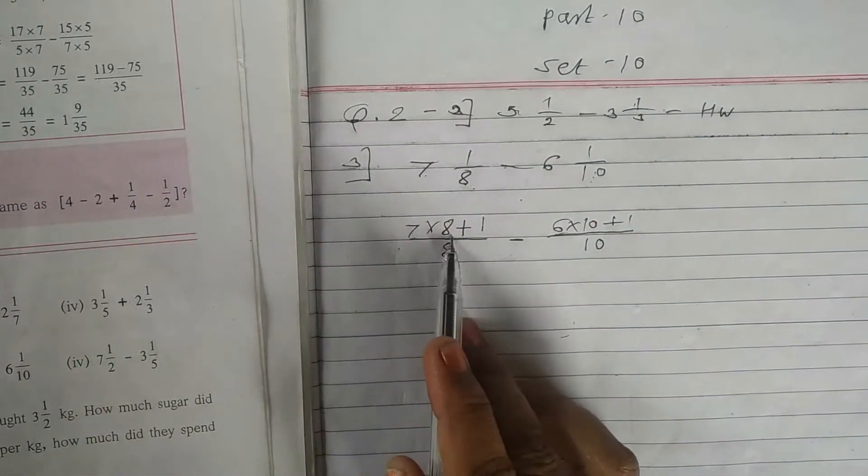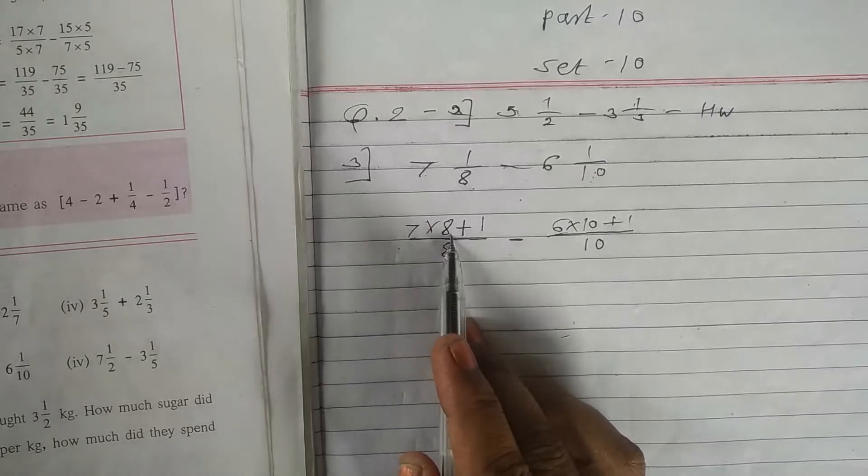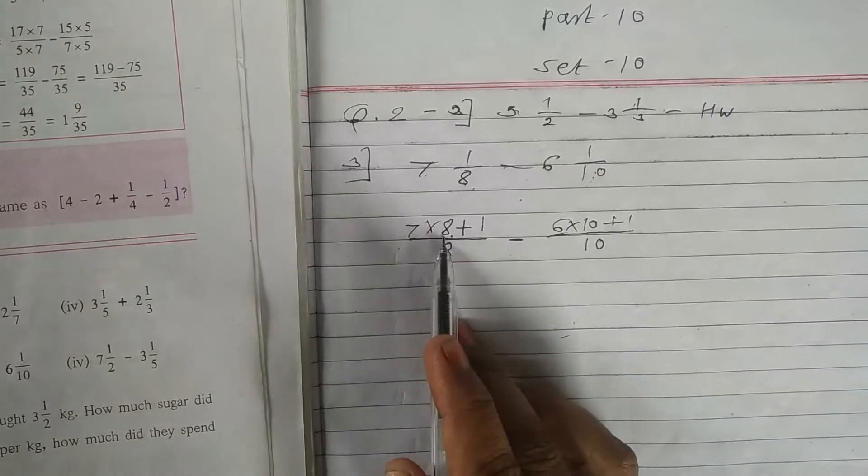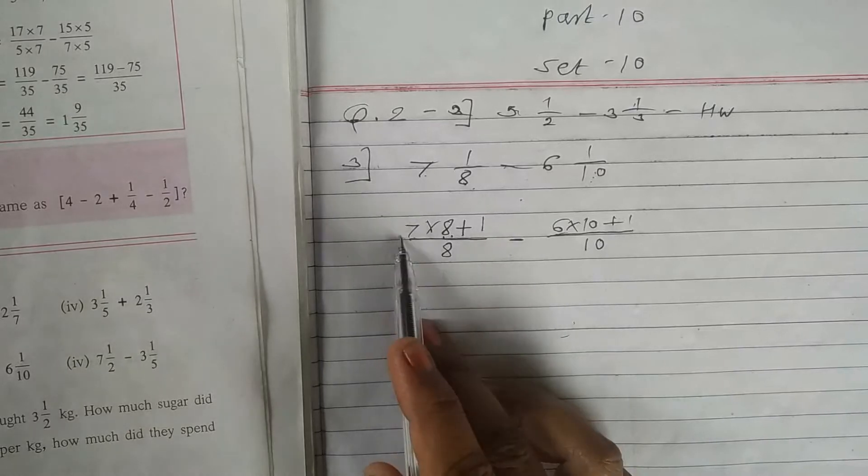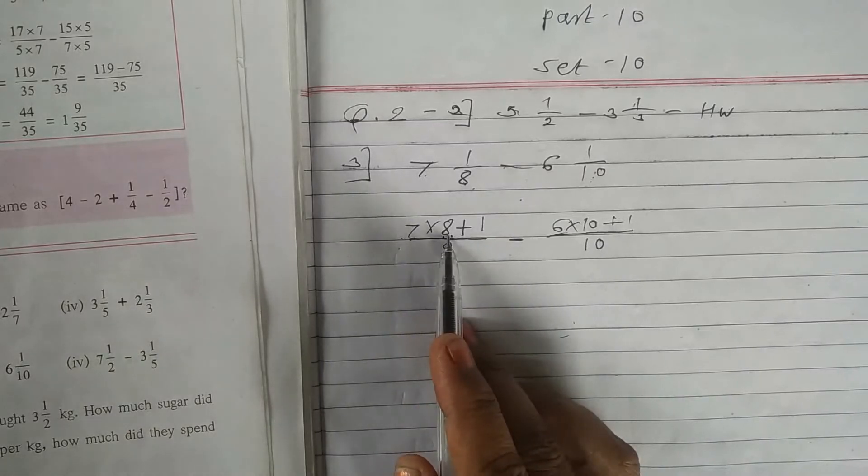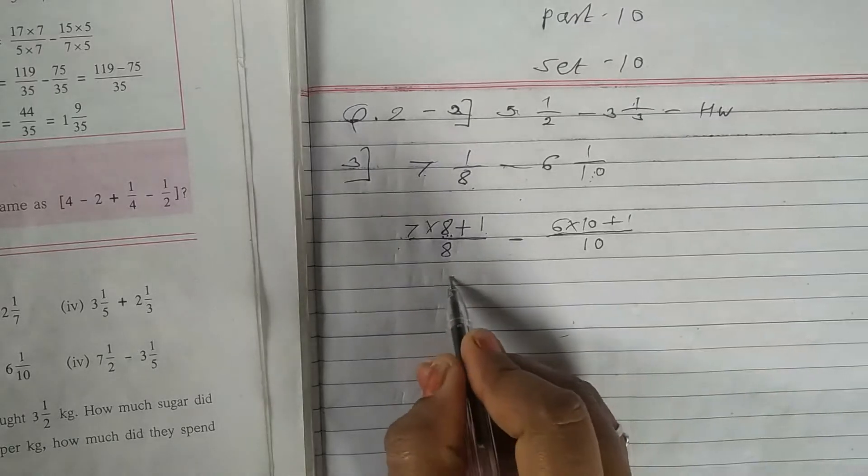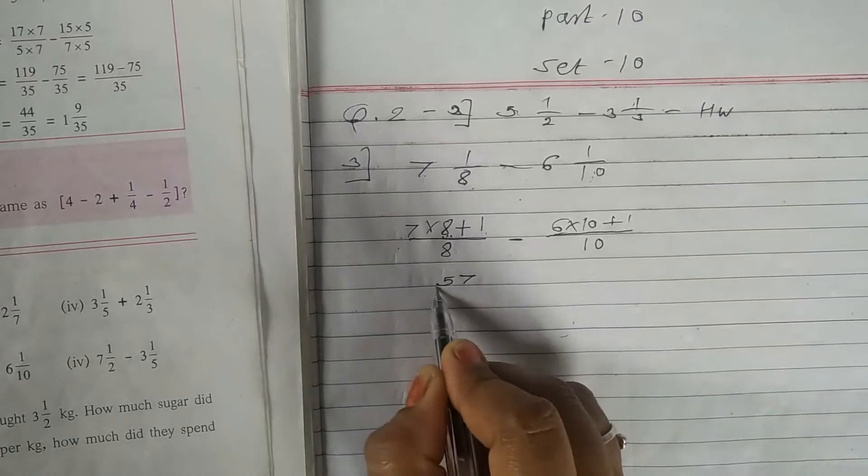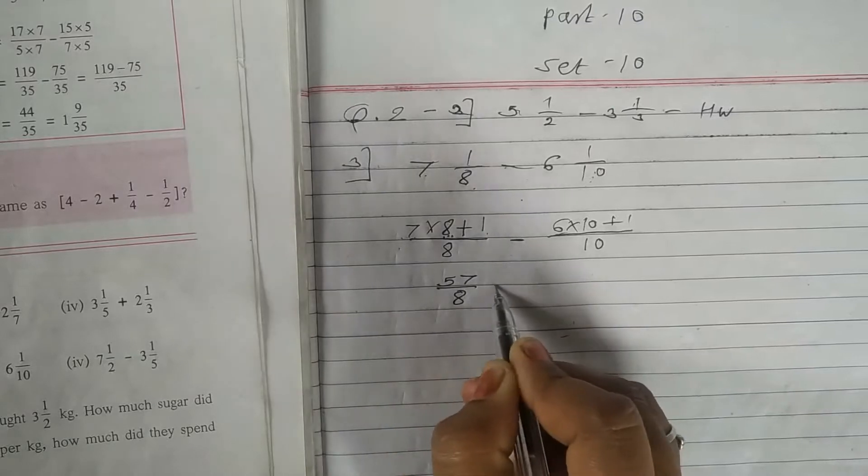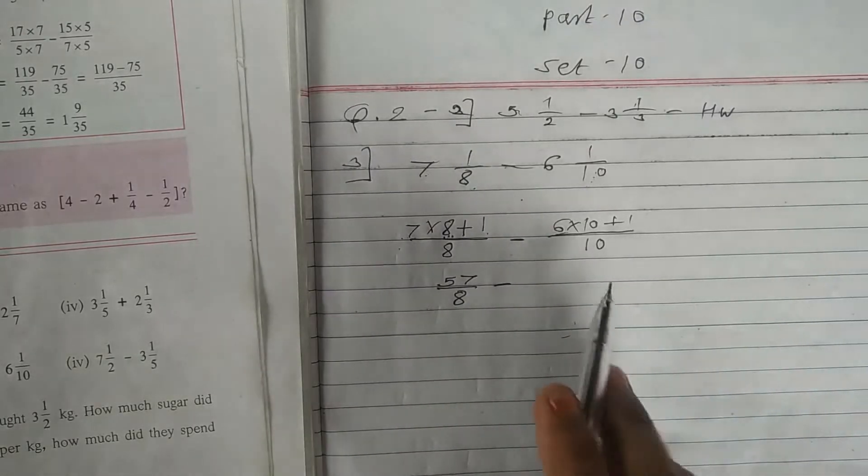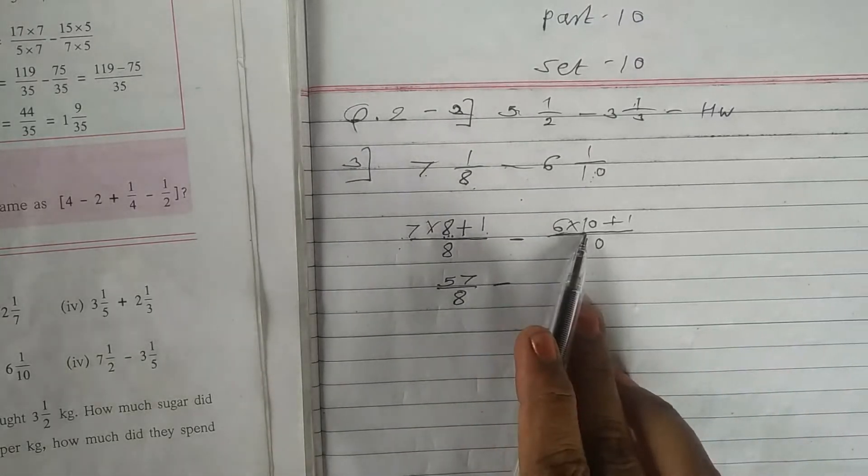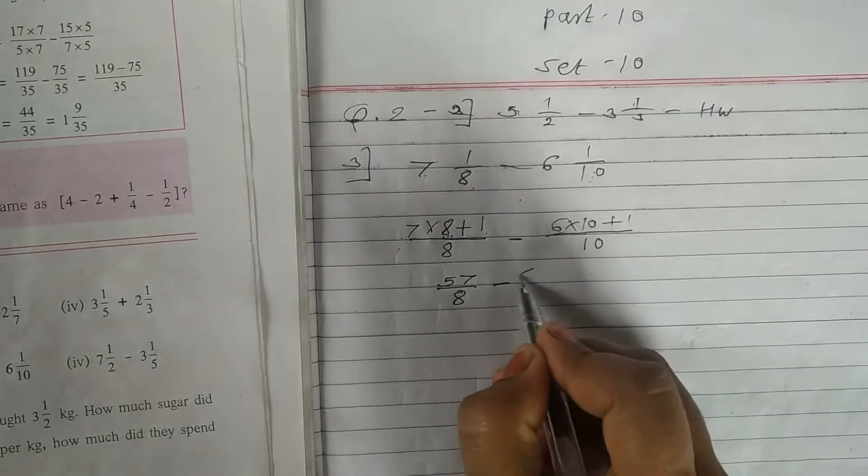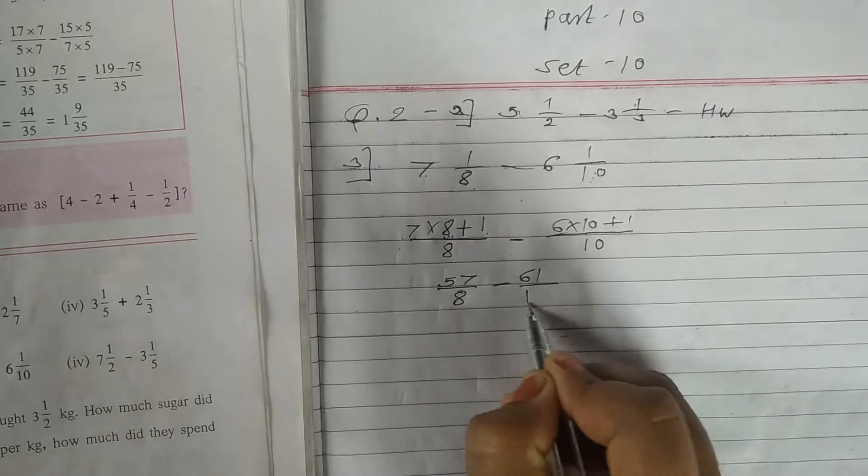Now do calculations. 7 8's are 56. You should know table for the students. 8 7's are same. 7 8's are 56 plus 1, 57 upon 8 minus 6 multiply by 10, 60 plus 1, 61 upon 10.